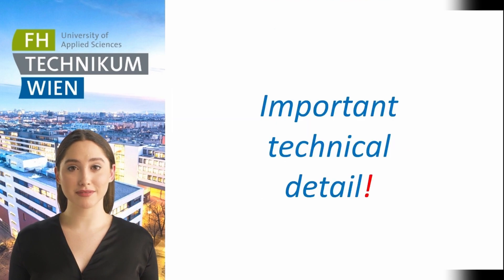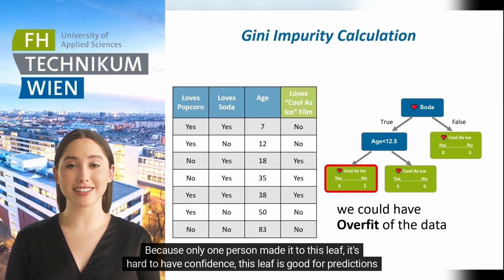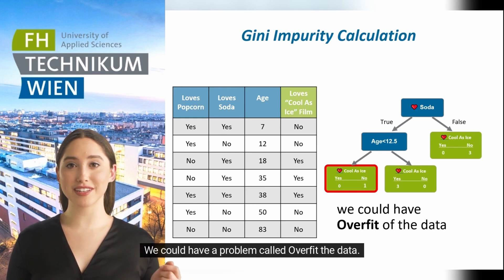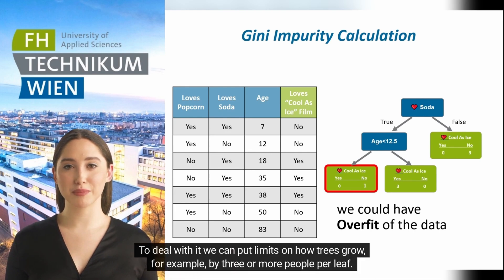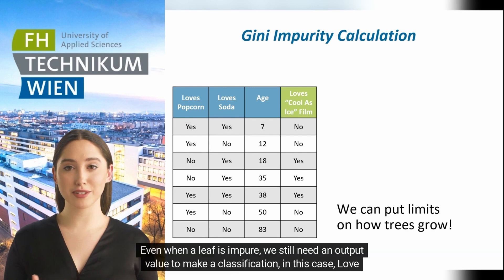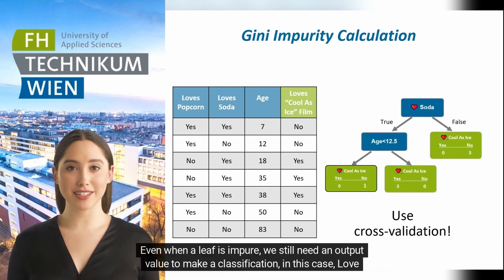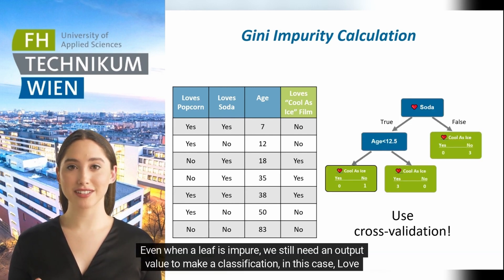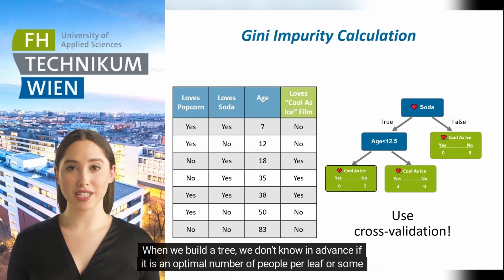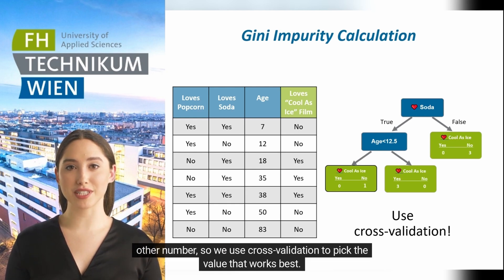Important technical detail: because only one person made it to this leaf, it's hard to have confidence this leaf is good for predictions with future data. We could have a problem called overfitting the data. To deal with it, we can put limits on how trees grow — for example, requiring three or more people per leaf. Even when a leaf is impure, we still need an output value to make a classification. When we build a tree, we don't know in advance the optimal number of people per leaf, so we use cross-validation to pick the value that works best.